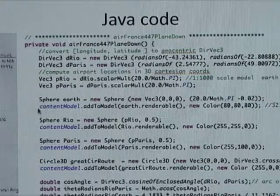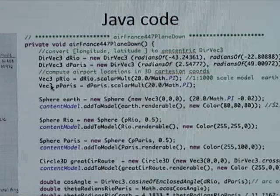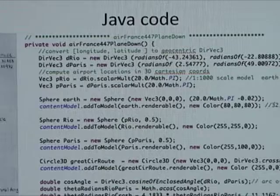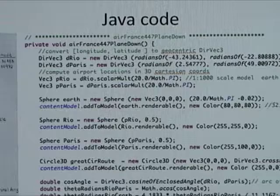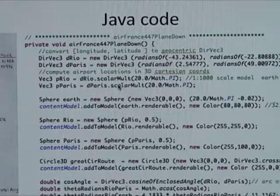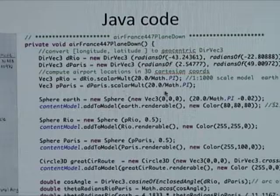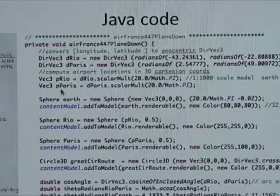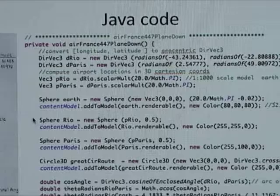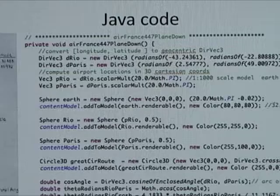Then having computed those two directions from the center of the earth out to Rio and to Paris, the student's in a position to calculate the actual 3D locations for the two airports in a geocentric coordinate system. That's being done right here. Remember that position representing object, the Vec3? Here we go with the first one, P Rio, is the location of Rio de Janeiro. That can be obtained just by scalar multiplying the direction by the radius of the earth. I think they're using a 1 to 1,000 scale model here. Same for Paris. Then having computed that, the student is ready to put some graphics up on the screen, and they'll create an earth, which is just a sphere, and they'll create some mini-spheres for Rio and Paris.